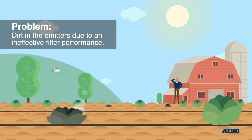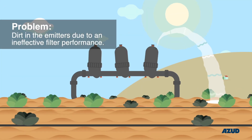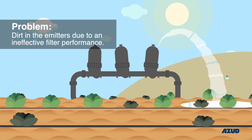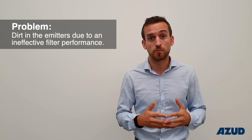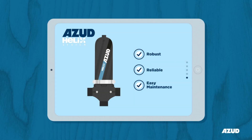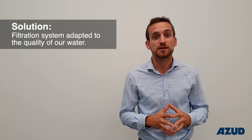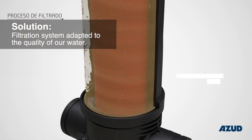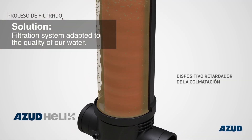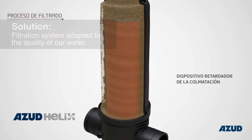The first and most common problem is that the emitters get directly clogged due to any kind of dirtiness — due to an ineffective filter performance, or because a filter hasn't been installed or has been removed. To solve this problem, our filtration system must be installed with the adequate technology adapted to our water quality. This is an essential element in our installation which protects it from direct clogging.